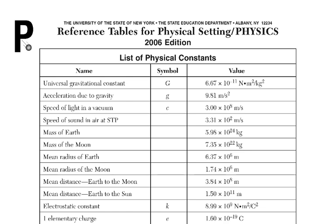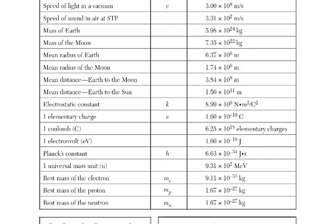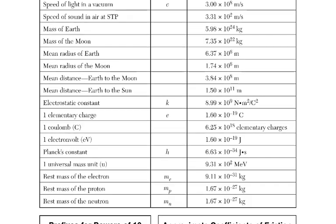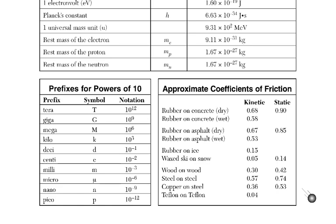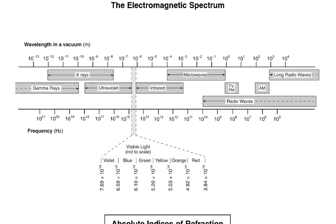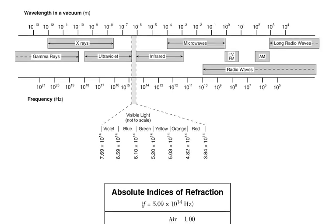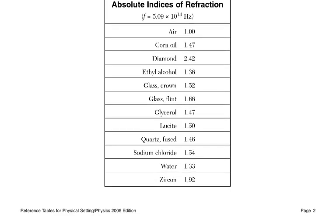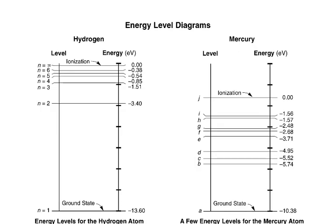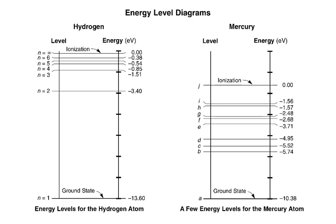Here is the reference table. We have page one with some of the constants we might need, like speed of light in vacuum and Planck's constant. Then we have page two with the electromagnetic spectrum, and page three with our energy level diagrams. We are most likely going to need those.